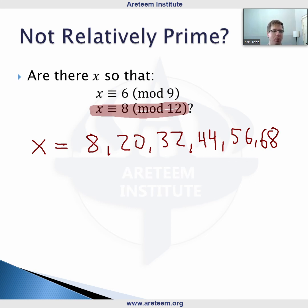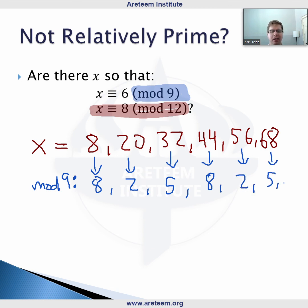I'll let you check that none of these work. Let's look mod 9. What are these numbers' remainders when we divide by 9? We want to look for patterns. 8 becomes 8, 20 becomes 2, 32 becomes 5, 44 is 36 + 8, we go back to 8, 56 becomes 2 again, 68 becomes 5 again. This pattern repeats: 8, 2, 5, 8, 2, 5 over and over.